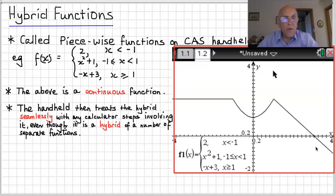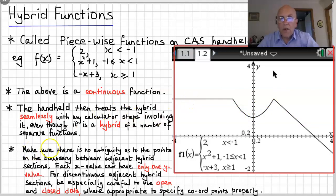If you went f of 0, for example, it'll know that this is the bit of the graph which is appropriate for that value of x. It works it all out seamlessly. You don't have to do it. So you want to make sure that there is no ambiguity in the way you're defining this function at the points on the boundary between adjacent hybrid sections. Each x value can have only one y value if it's a function. Make sure you're careful with your housekeeping.